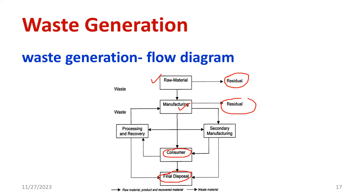At the same time, we can consider the recycling process. From the consumer side, waste is collected and goes for processing and recovery. From the manufacturing side, there is also a possibility of secondary manufacturing for defective items. For example, if you order something from Amazon or an e-commerce company and return a defective item, that item goes for secondary manufacturing — which is a recycling process. Secondary manufacturing products also reach customers and the cycle repeats. From processing and recovery, waste is again generated, feeding back to the manufacturer.